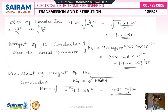Diameter of the conductor: area A = πd²/4, so d = √(4A/π). Solving the simplification gives d = 1.26 meters. The weight of the conductor becomes 1.34, and the resultant weight of the conductor can be calculated accordingly.